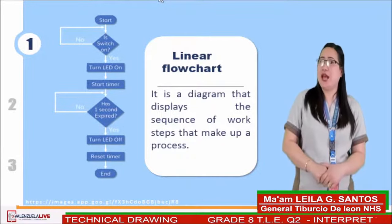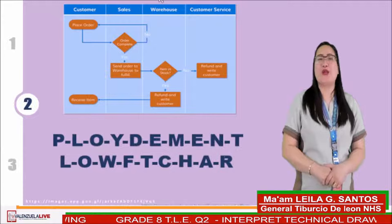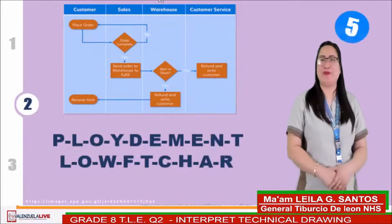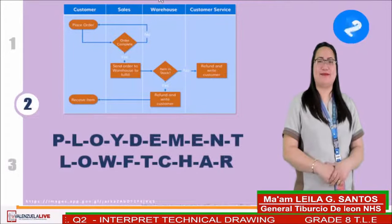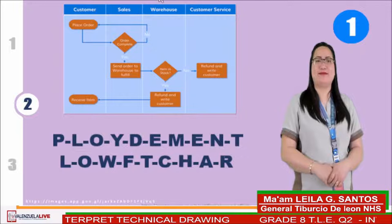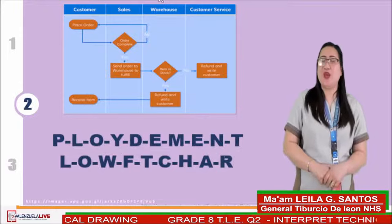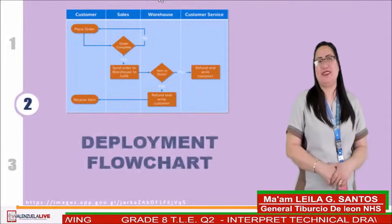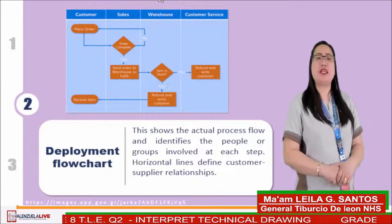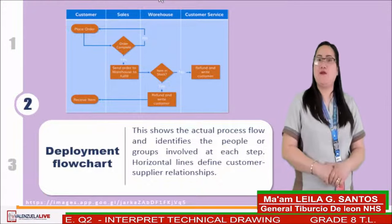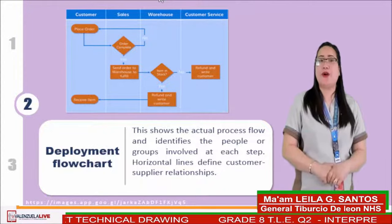The second type is a deployment flowchart. It shows the actual process flow and identifies the people or groups involved at each step. Horizontal lines define customer-supplier relationships.